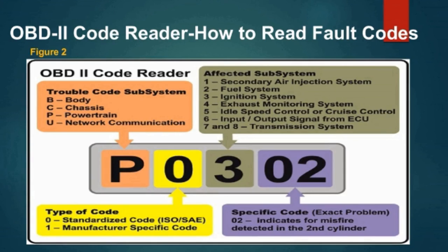OBD2 Code Reader — How to Read Fault Codes. Let's look at the code P0302 as an example. The first character, P, indicates powertrain. The second numeric character, 0, shows that this is a generic ISO/SAE code. The third numeric character, 3, indicates an ignition system misfire. The final two numeric characters, 02, indicate a code number identifying a specific fault — in this case, a misfire detected in the second cylinder.